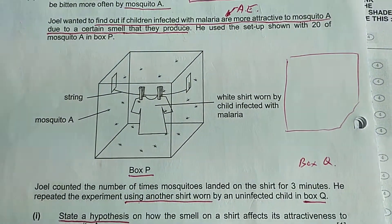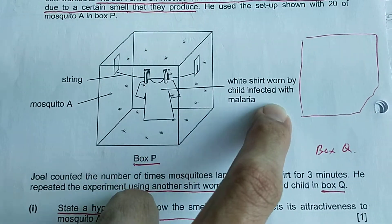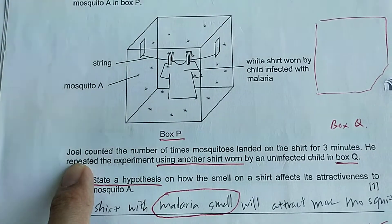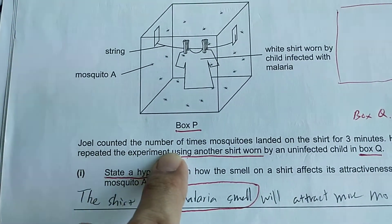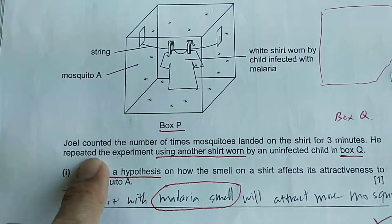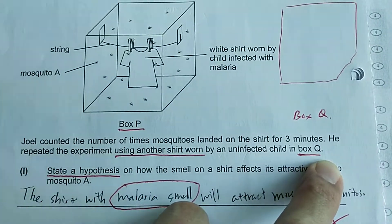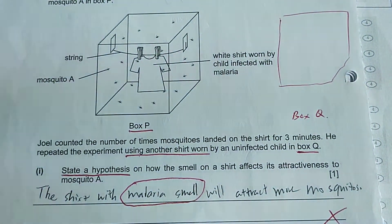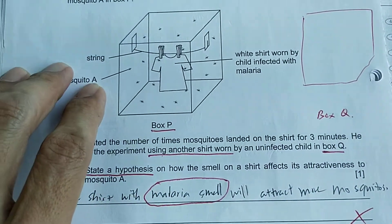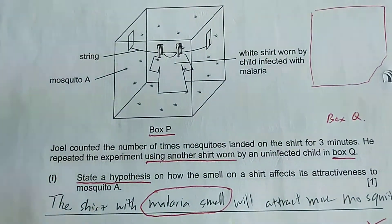In this experiment, you can see in the diagram that box P has a white shirt worn by children infected with malaria, and there are 20 mosquitoes. Joel counted the number of times mosquitoes landed on the shirt for three minutes. He repeated the experiment using another shirt worn by an uninfected child in box Q. I drew an empty space here so students can picture another white shirt hung there, worn by uninfected children.